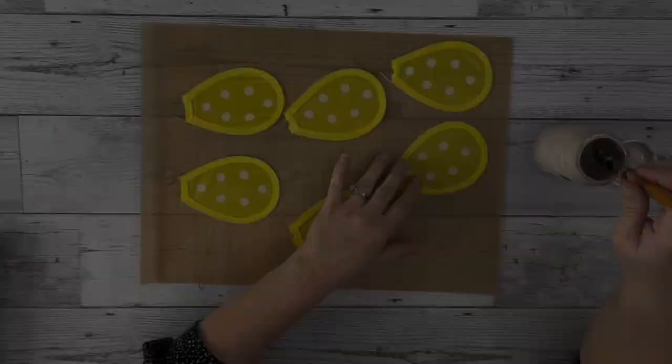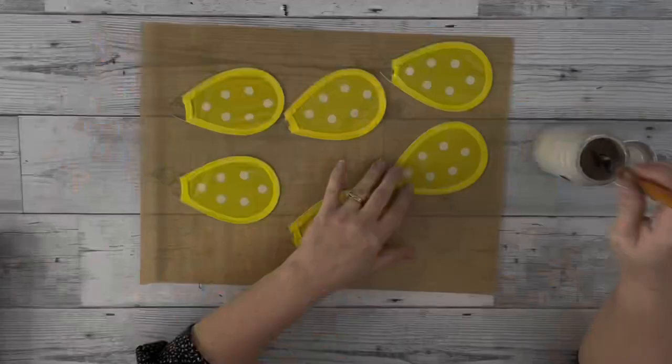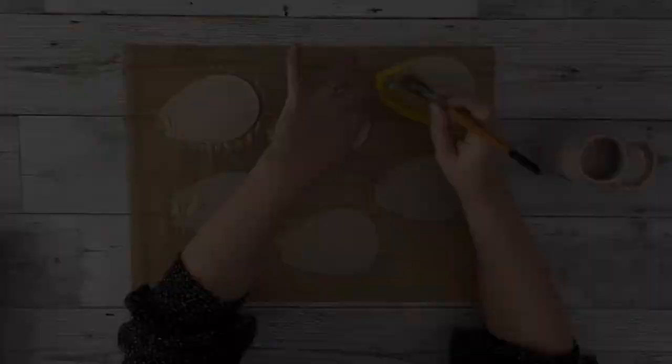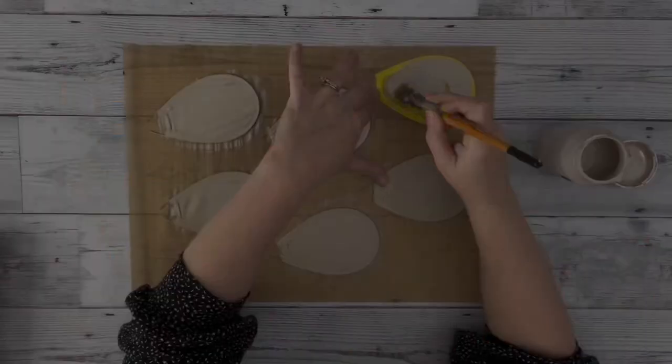I started by removing all of the petals from the pinwheel with some wire cutters, painting them with mineral chalk paint by Waverly. I just did one coat on the front. I also did two coats on the back, but you don't really need to because you won't see them.